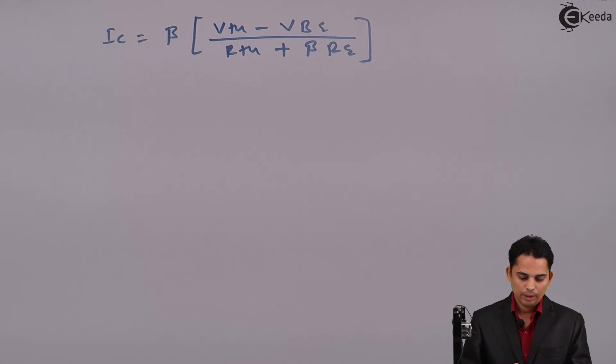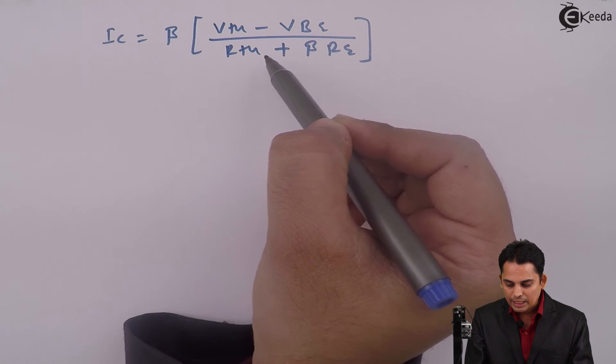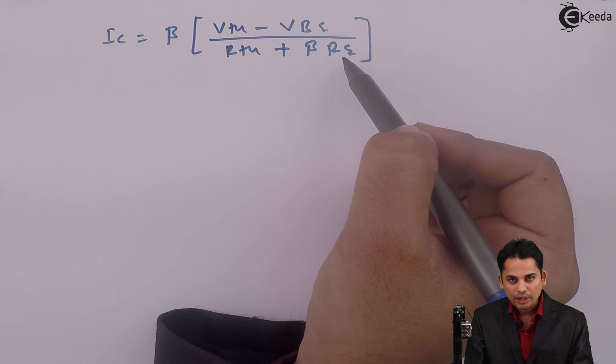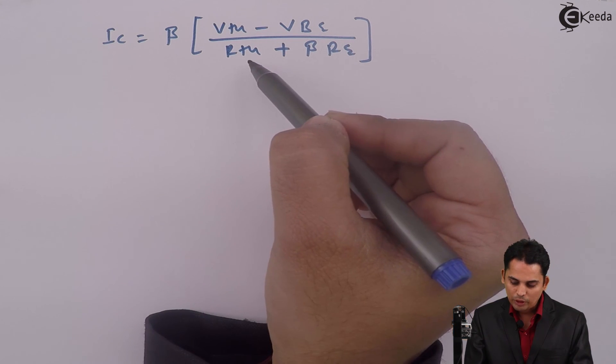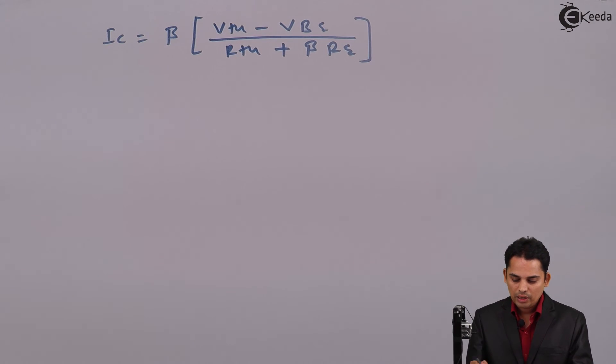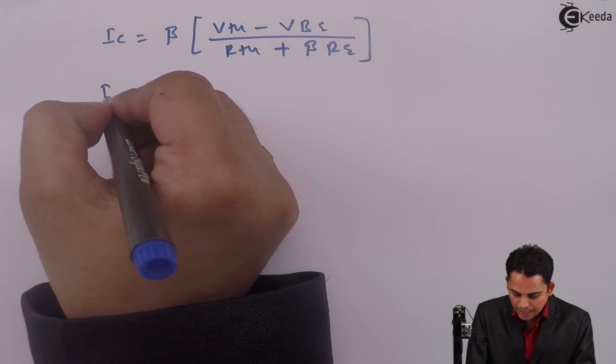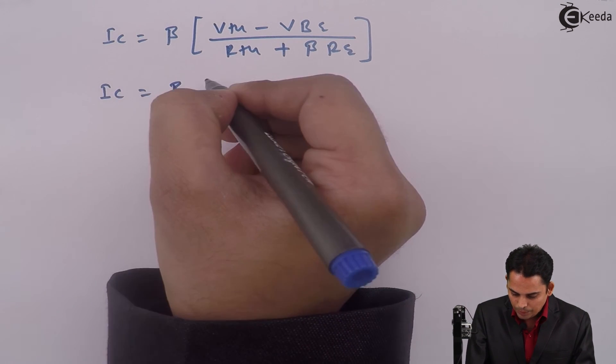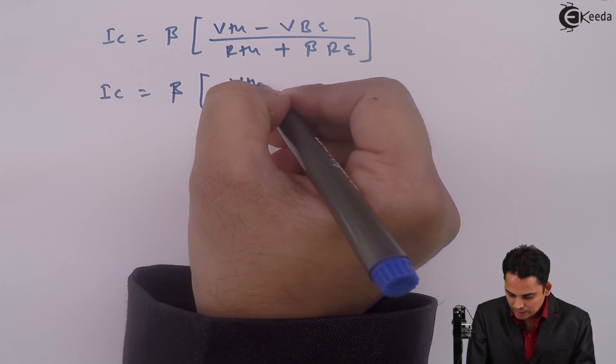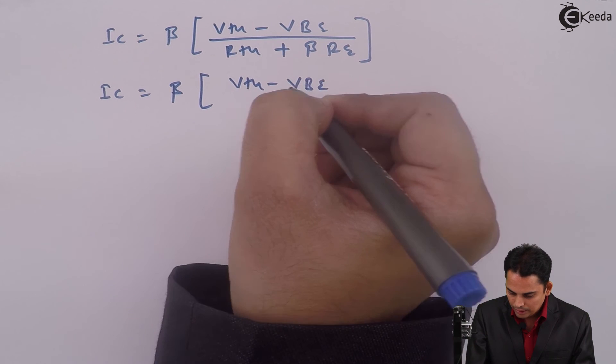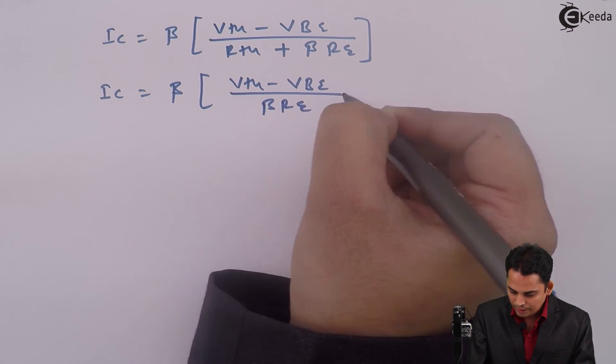Are you getting this point? What I am doing is I am going to compare Rth and beta RE so that we will get only one denominator. This beta RE is comparatively very high with respect to Rth, and hence we can neglect the Rth. So the equation will become: IC is equal to beta times (Vth minus Vbe) divided by (beta times RE).